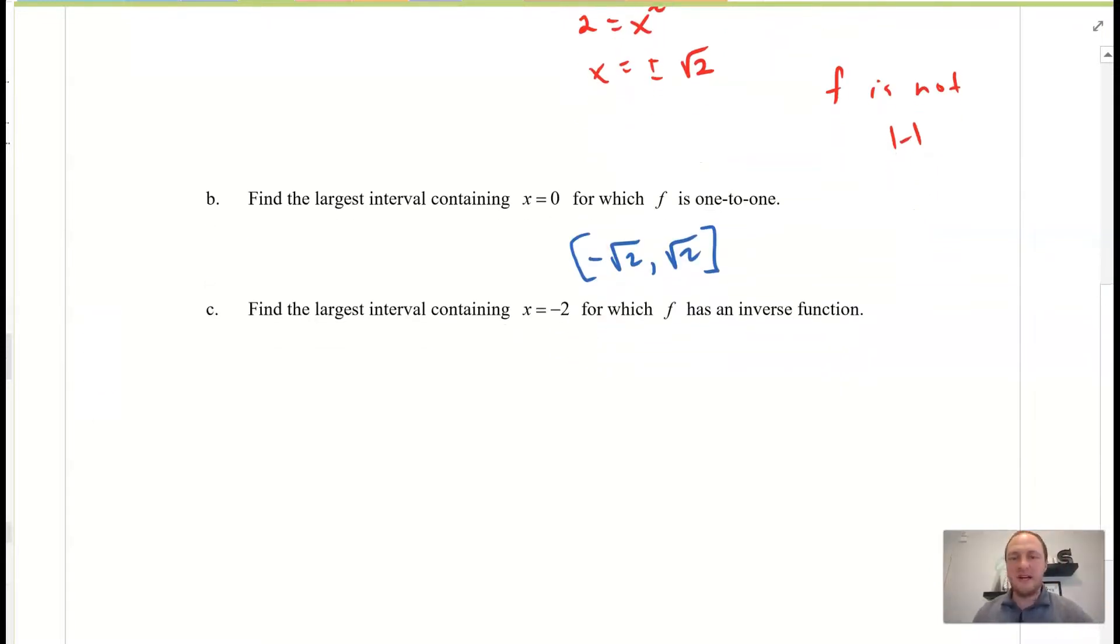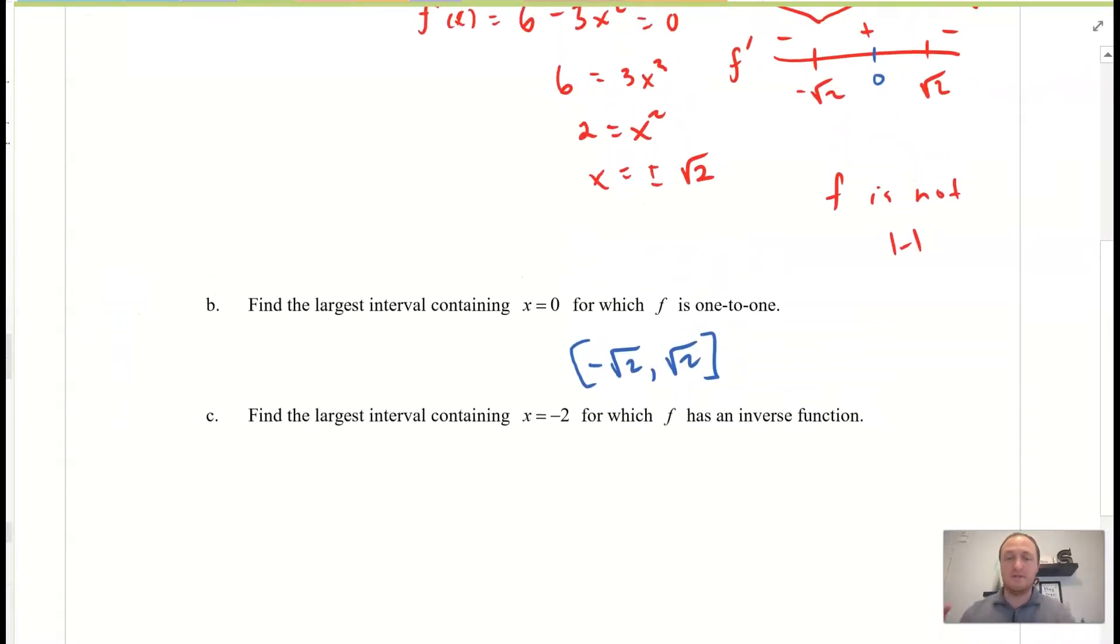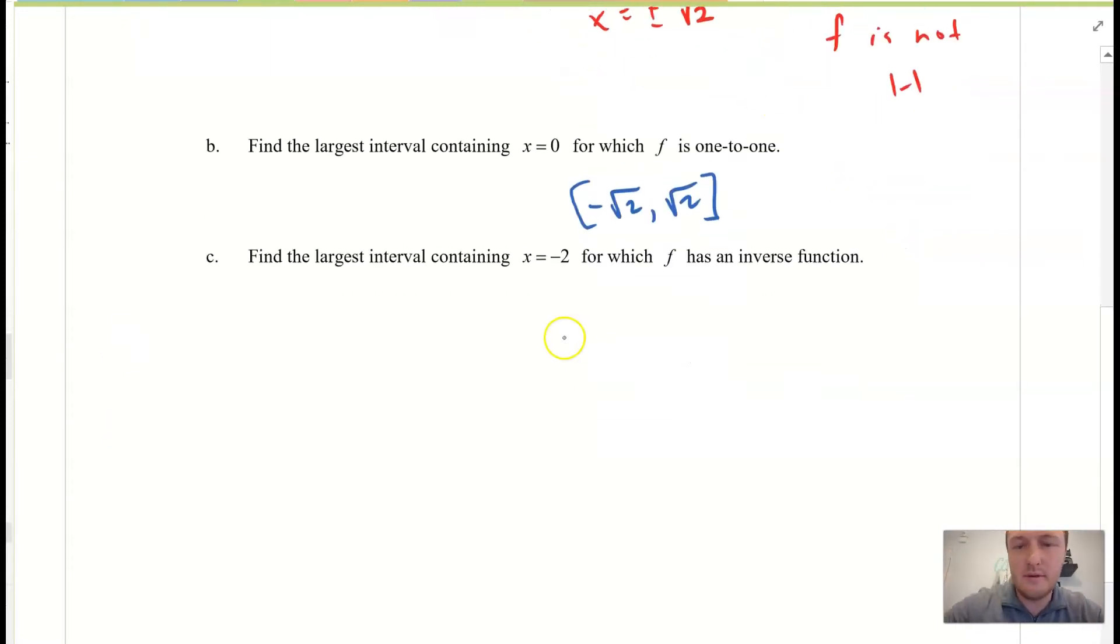Find the largest interval containing x equals negative 2 for which f has an inverse function. So, for it to have an inverse function, it must be monotonic, right, to be 1 to 1. So, we have to identify, okay, where is negative 2? Well, negative 2 is over here. So, that interval is going to be from negative infinity to negative root 2.